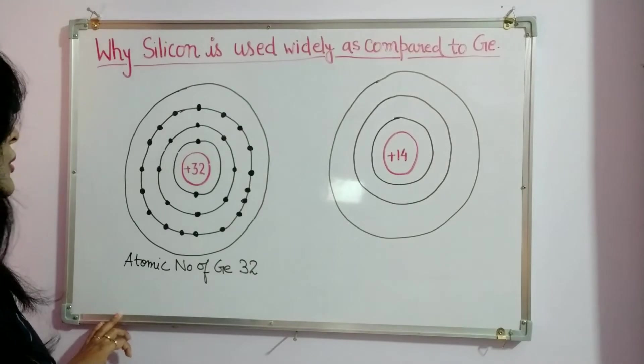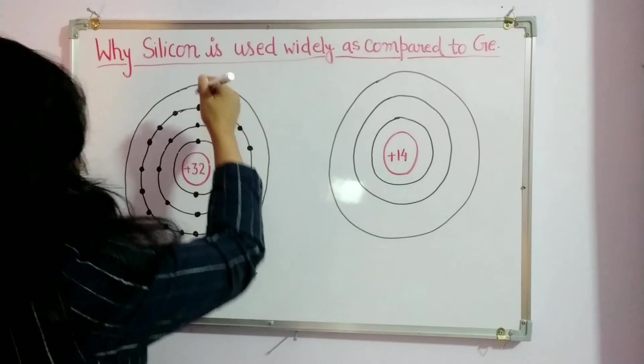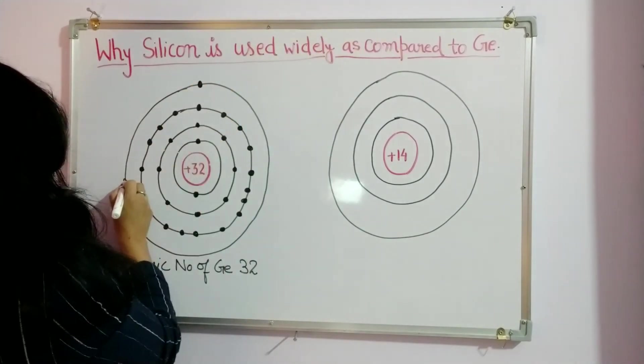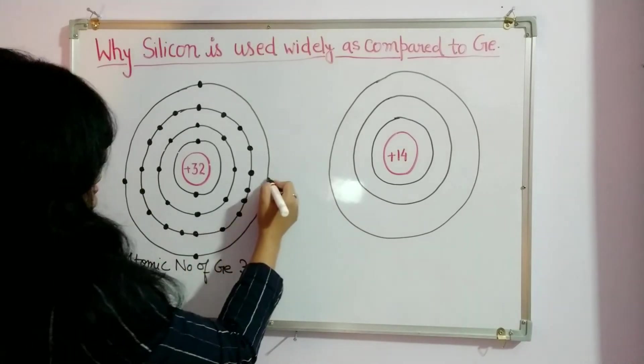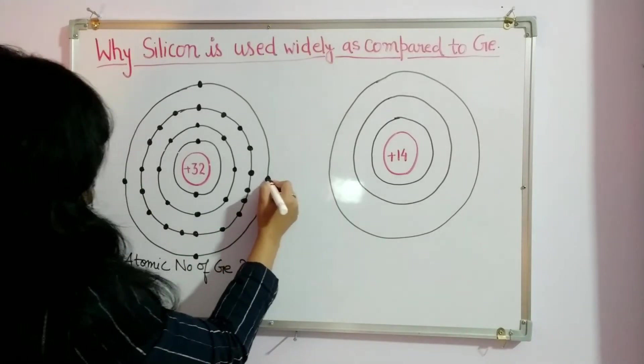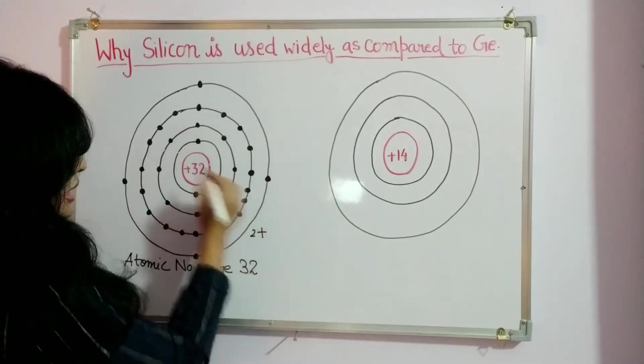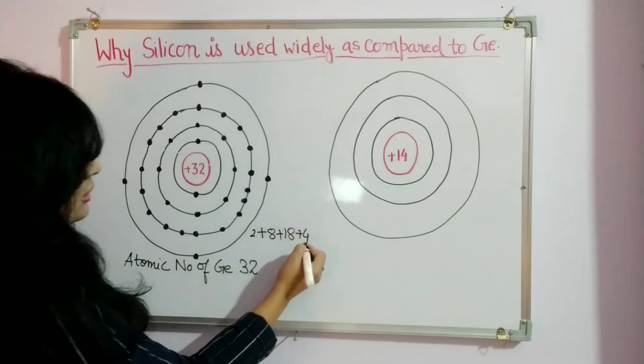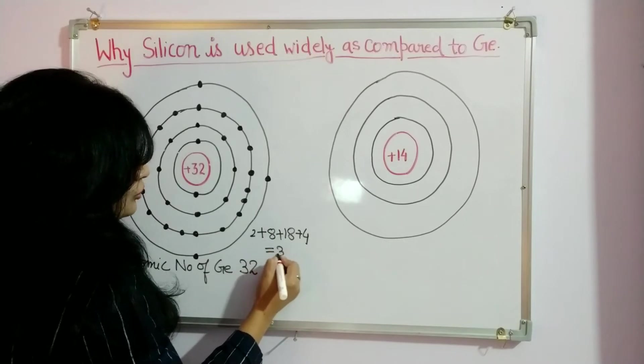Now we have total 32 electrons, so the four remaining electrons are arranged in the outermost shell: one, two, three, and four. Let's count it: 2 plus 8 plus 18 plus 4, so that's 32.